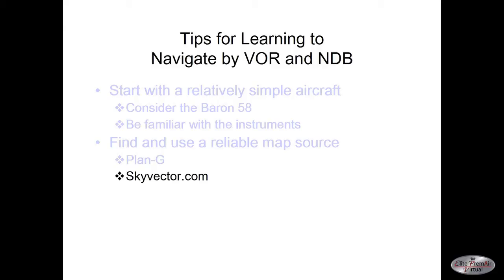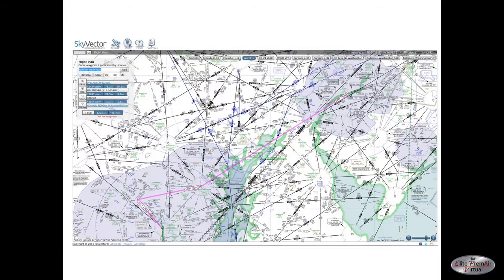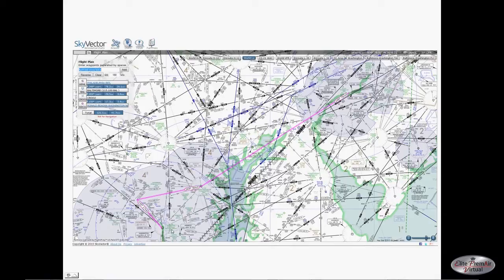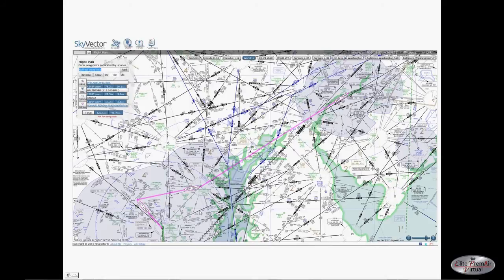SkyVector.com provides some good information. I personally use Plan G mainly as my map source and SkyVector.com for charts including approach plates, SIDs and STAR charts, and other information, though you can do flight planning on it as well. This is the same Philadelphia to Washington National River Visual approach. By zooming in you can see various VOR frequencies, airport information, and airways crisscrossing the map. A possible downside is that these charts are up to date, so approach plate runway numbers may differ due to magnetic drift, and SID and STAR directions may vary slightly from what FSX has.